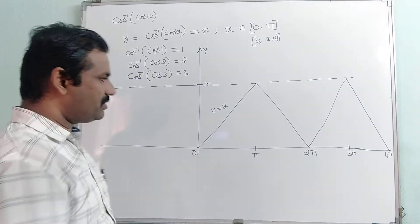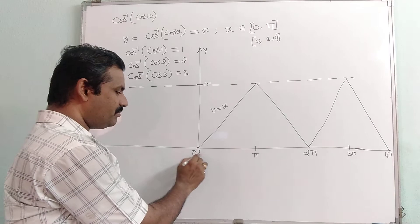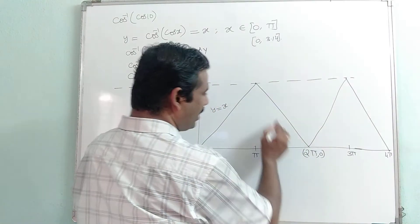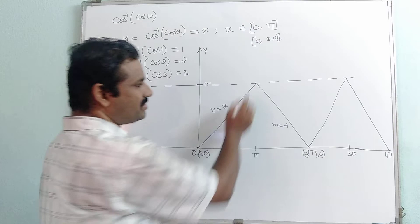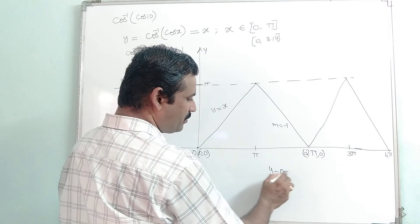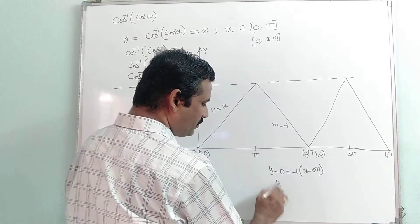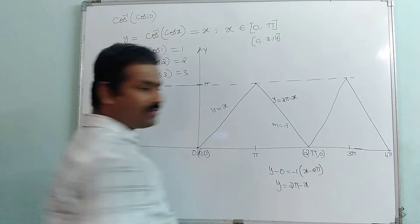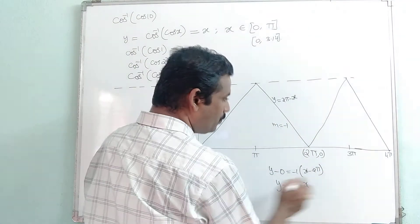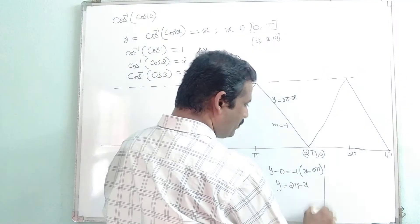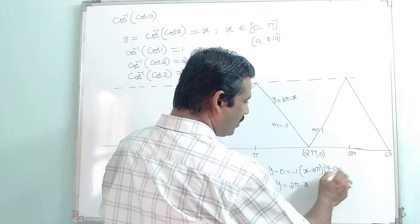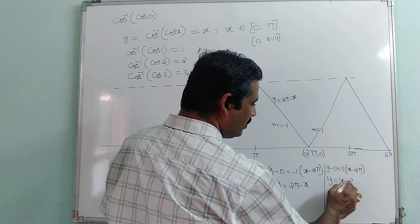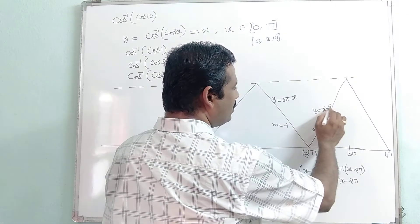The graph continues in a zigzag way. The first segment is y equal to x, with slope 1 passing through the origin. The next line passes through the point 2pi comma 0 with slope minus 1, giving the equation y equal to 2pi minus x. After that, from 2pi to 3pi, the slope is 1 and the line passes through 2pi comma 0, giving the equation y equal to x minus 2pi.